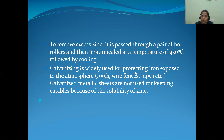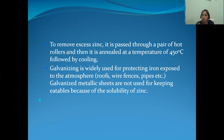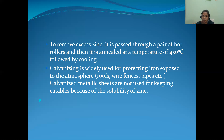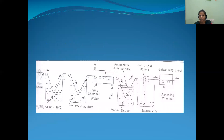Galvanizing is widely used for protecting iron exposed to the atmosphere, especially for roofs, wire fences, pipes, and screw bolts. However, galvanized metallic sheets should not be used for keeping eatables because of the solubility of zinc — zinc is poisonous to humans. It can be used in the construction industry and other industries, except for food applications.